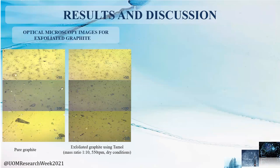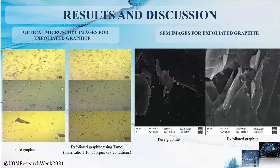This optical microscopy image shows how the dispersing ability of graphite has been improved by exfoliating them using Tamol. The SEM images of pure graphite and exfoliated graphite clearly show how our exfoliating process has impacted the graphite sample. The right-hand side SEM image shows how the thick layers of pure graphite have been reduced into thin layers by the exfoliation technique.